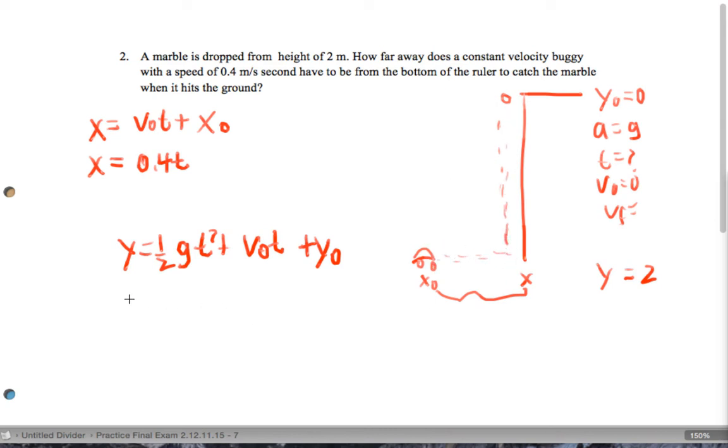So we're going to get 2 equals 1 half times, I'm just going to round and say 10 times t squared plus 0 times t plus 0. And so we end up getting 4 tenths equals t squared.